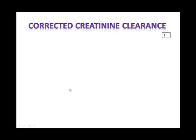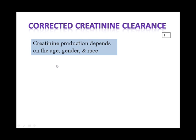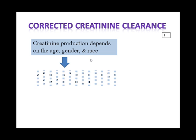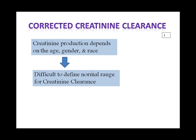So we need the corrected creatinine clearance. Creatinine production depends on age, gender, and race. Serum creatinine is usually between 0.8 to 1.6 mg per deciliter for a normal person. Children have lower muscular capacity than adults. Men usually have more muscle mass than women, and Black individuals tend to have more muscle mass than other ethnicities. So we need supportive standards to calculate the normal range.